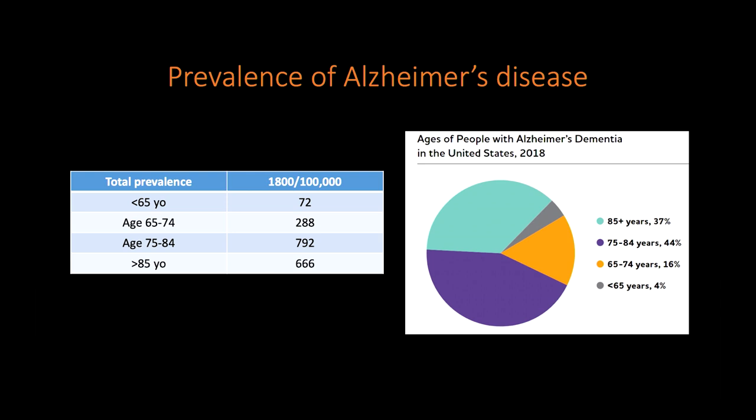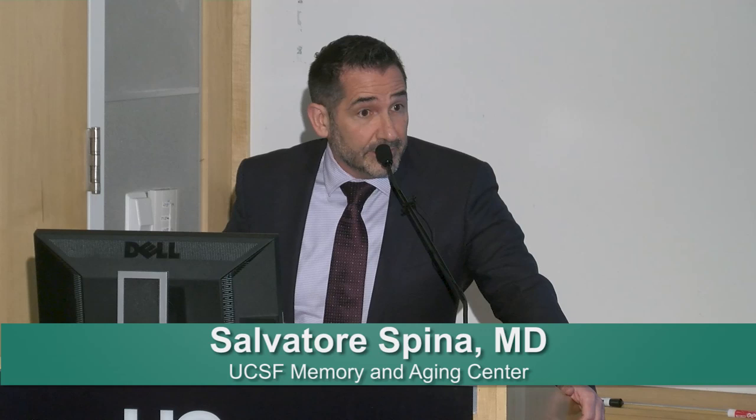After 85, the number of people affected with Alzheimer's disease actually starts declining for two reasons: fewer people survive past age 85, given life expectancy in our country, and also the occurrence of other diseases of aging that can lead to dementia even in the absence of Alzheimer's disease changes.